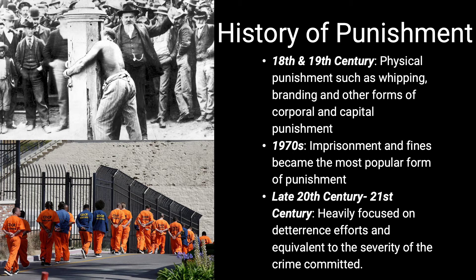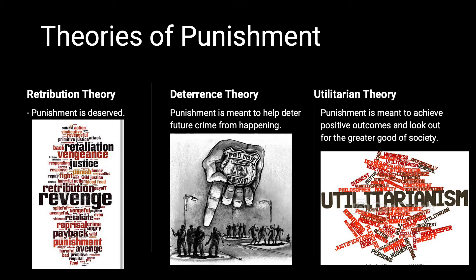Today, punishment efforts are more focused individually on the severity of a crime and handled in a more humane way. Throughout history, there have been many theories associated with punishment. First is the retribution theory, which holds that punishment is justifiable because it is deserved, based on seeking revenge and making the offender suffer for their wrongdoing. Another common motive is the deterrence theory, which focuses on preventing this particular person and others from committing crimes by promoting fear in the community. Lastly is the utilitarian theory, which aims to achieve the most positive outcomes and the greater good of society, giving minimal suffering to an offender with a punishment that is justifiable and equally effective as a harsher one.